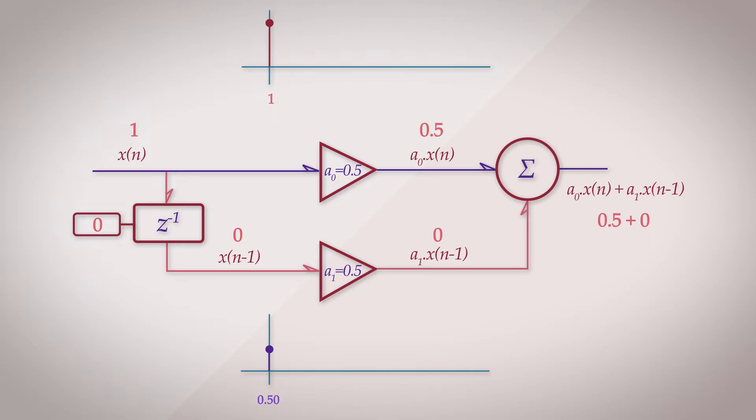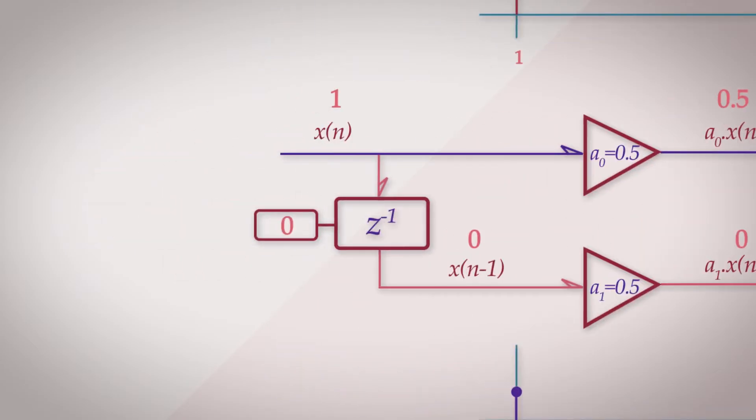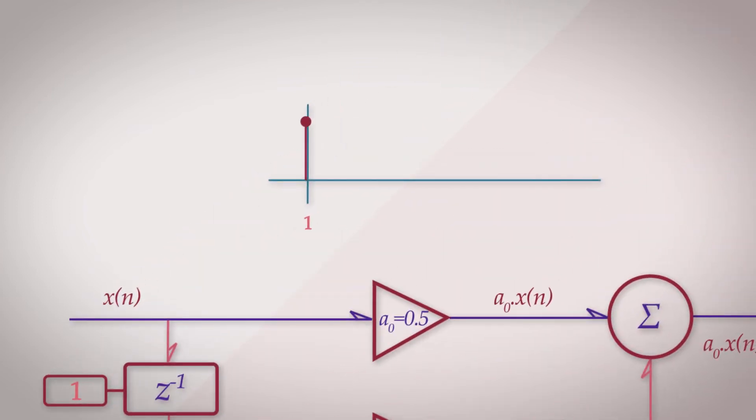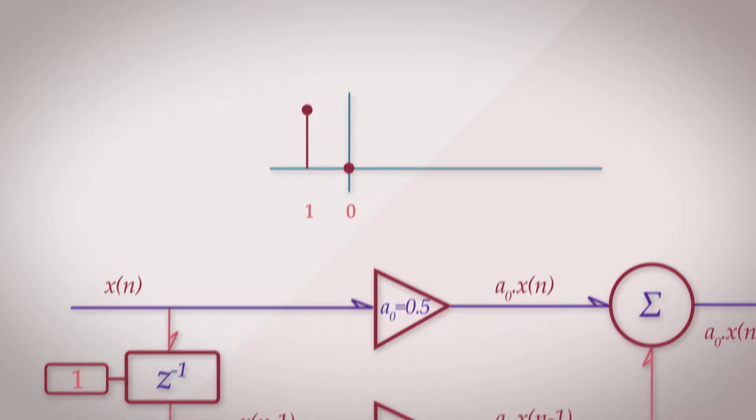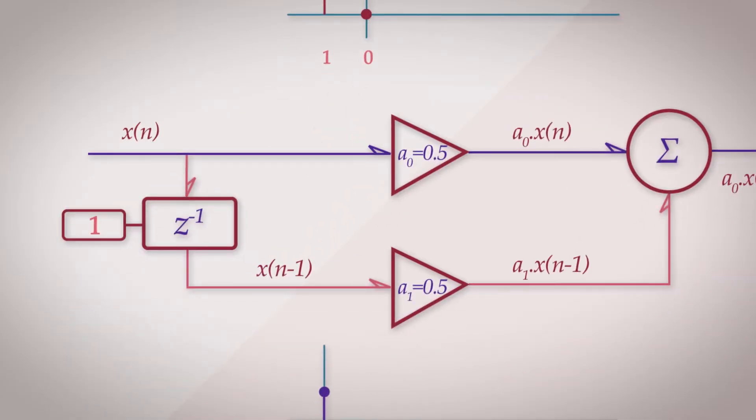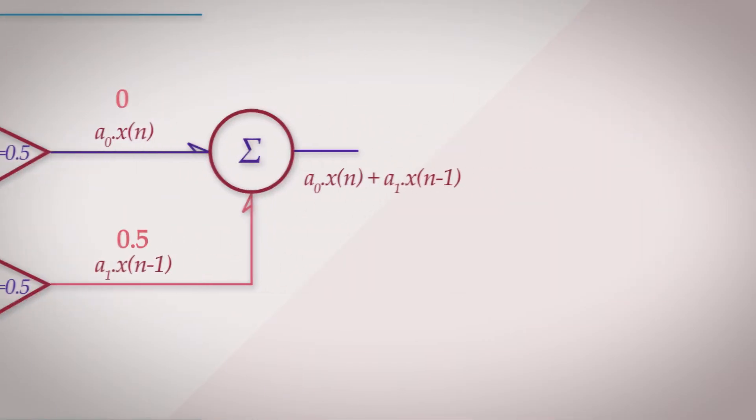Now we need to update the state of the delay register with the value that was passed. So we set the state of the register to 1. Next in the input series, we have 0. So calculating the difference equation again, the direct path is 0 times 0.5, and in the delayed path the previous state was 1, so the delayed path results in 0.5. The output is 0.5.